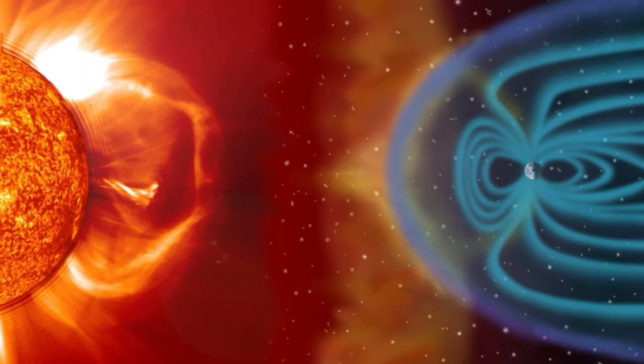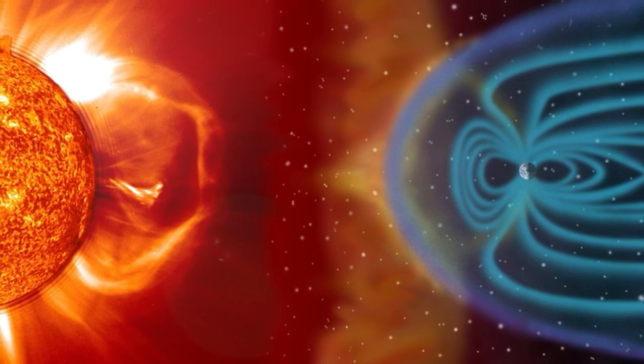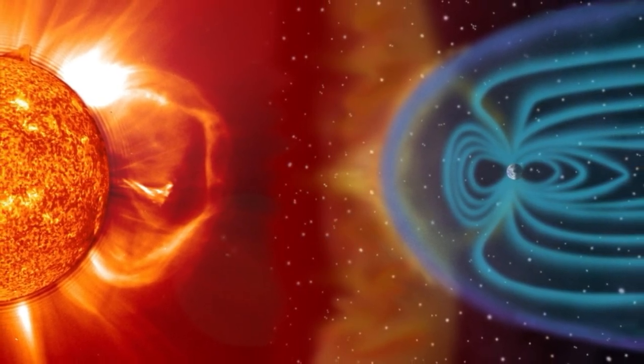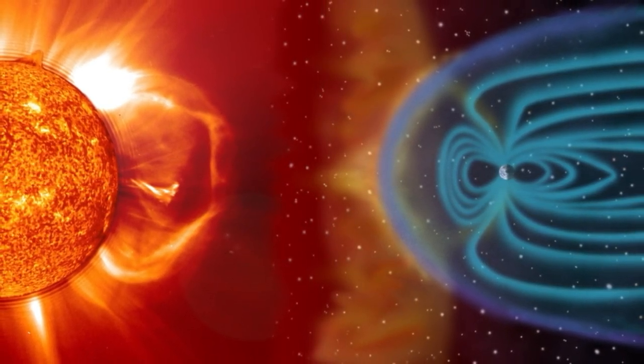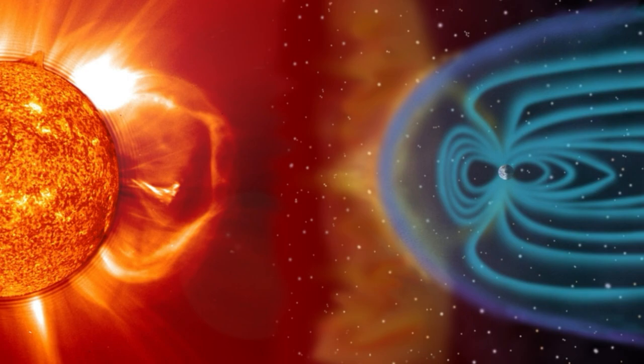These storms occur when charged solar particles crash into Earth's magnetic field, called the magnetosphere, compressing it slightly and allowing some particles to rain down on the planet's upper atmosphere. Most geomagnetic storms are minor, resulting in clearer auroras and occasional radio blackouts at high latitudes.